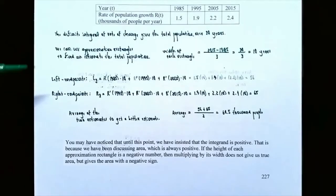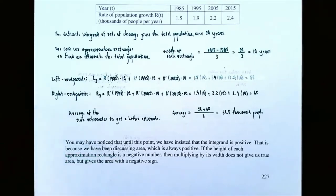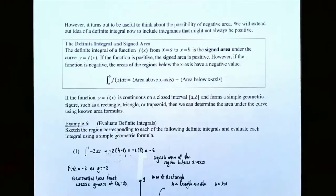Up until this point, we've insisted that the integrand be positive because we've been discussing area. However, the height of each approximation rectangle can sometimes be a negative value. When the height is negative and you multiply by the positive width, you get a negative value for that rectangle's area. We're now going to extend the definition of the definite integral to include integrands that can be positive or negative.